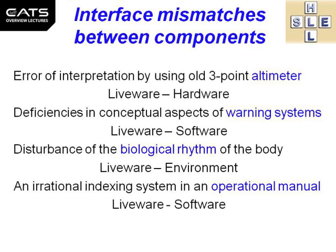Examples of interface mismatches between components in the shell model include: error of interpretation by using an old three-point altimeter — this would be liveware-hardware. Deficiencies in conceptual aspects of warning systems, for example the wrong colour lights, would be liveware-software. Disturbance of the biological rhythm of the body would be liveware-environment. And an irrational indexing system in an operational manual would be liveware-software.